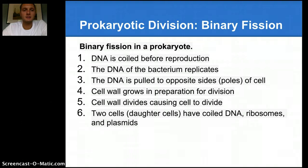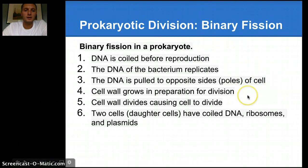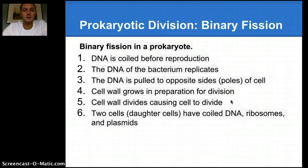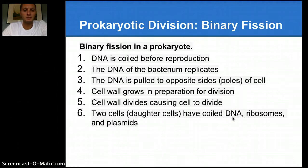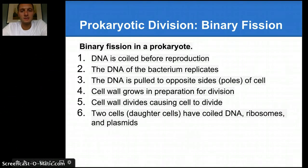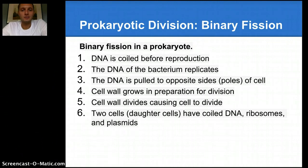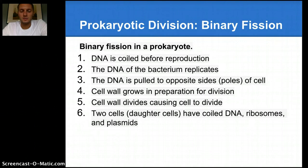Quickly, the steps of binary fission: the DNA is coiled before reproduction, it replicates, it's pulled to opposite sides of the pole, the cell grows in preparation for division, the cell wall begins to divide which causes the cell to divide, and then we end up with two daughter cells that have coiled DNA, ribosomes, and plasmids. This DNA is an exact copy of the original, so both cells end up with the exact same DNA. You could call this a type of asexual reproduction because there's no mixing of DNA and no gametes are produced. An advantage is that you don't have to find a partner or mate to reproduce, but it's not introducing any diversity in terms of the gene pool. We'll look at this more in second semester when we discuss evolution, natural selection, and the difference between asexual and sexual reproduction.